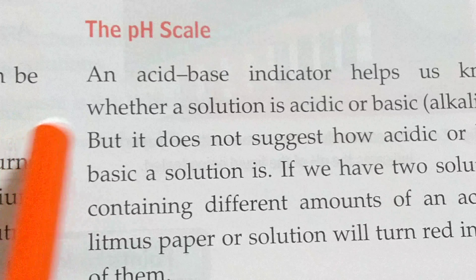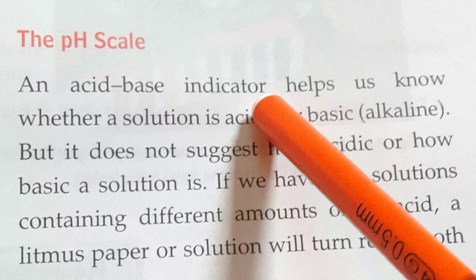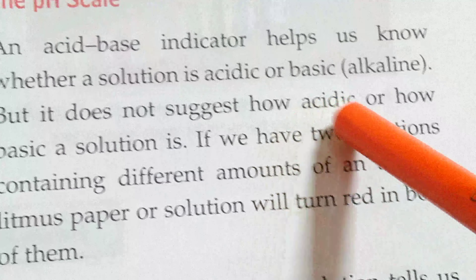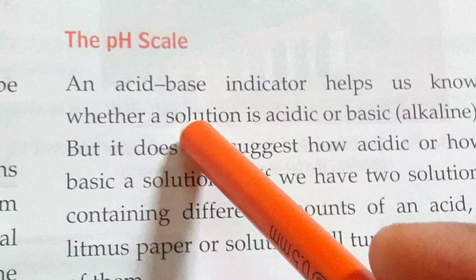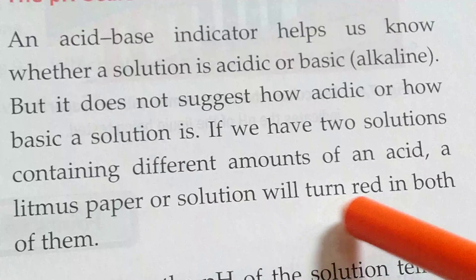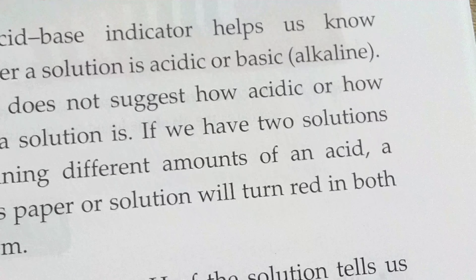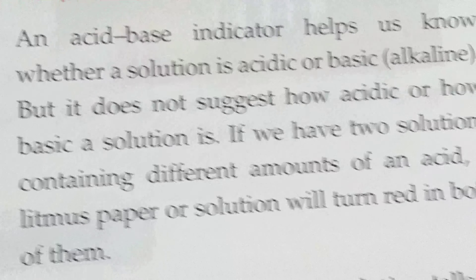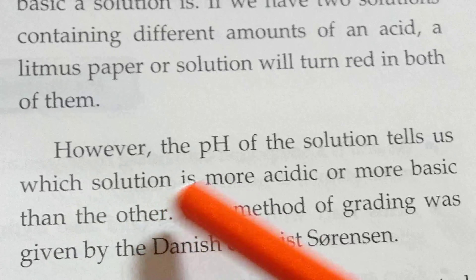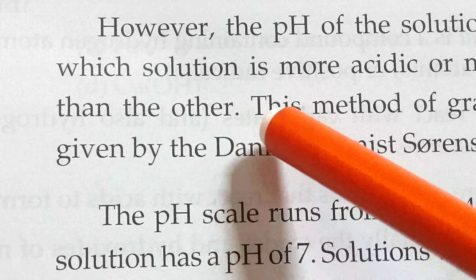Next, the pH scale. An acid-base indicator helps us know whether a solution is acid or base, but it does not suggest how acidic or basic a solution is. If we have two solutions containing different amounts of an acid, a litmus paper will turn red in both of them. So we can define how much acidic or how much basic a solution is by using the pH scale.